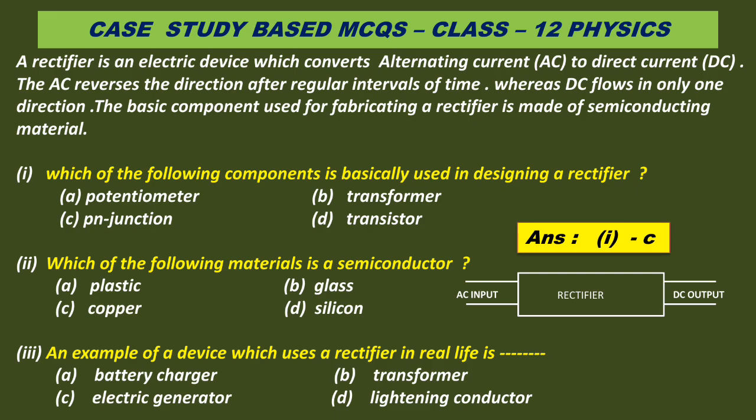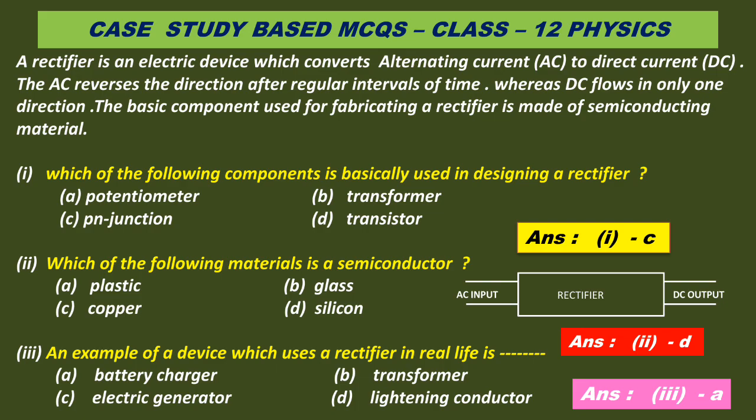Question 2: Which of the following materials is a semiconductor? Options: plastic, glass, copper, silicon. The correct answer is D — silicon. Question 3: An example of a device which uses a rectifier in real life is: battery charger, transformer, electric generator, or lightning conductor. The correct answer is A — battery charger.